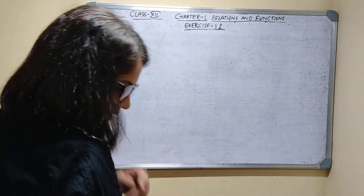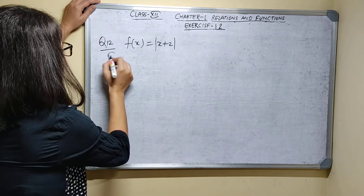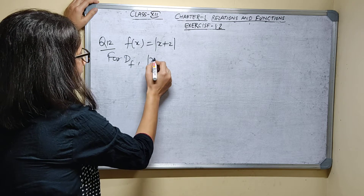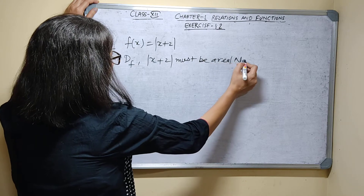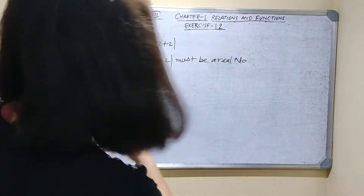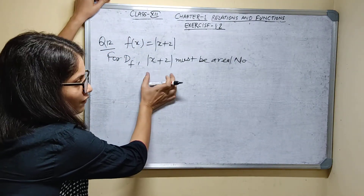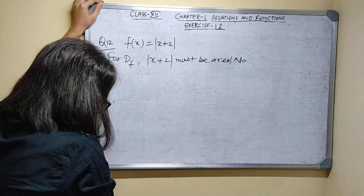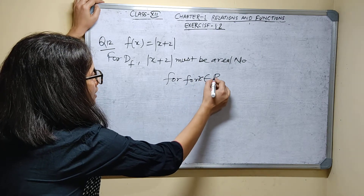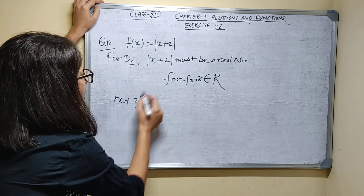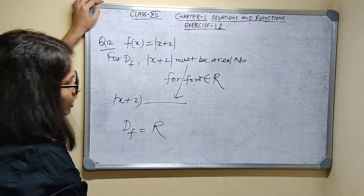Question 12: find the domain of the following real functions. First part: f(x) is equal to mod of x plus 2. For domain of a function, f(x) must be a real number, so mod of x plus 2 must be a real number. For every real value of x, mod of x plus 2 will be a real number. So for all x belonging to real numbers, domain of function is all real numbers.